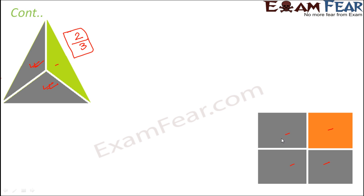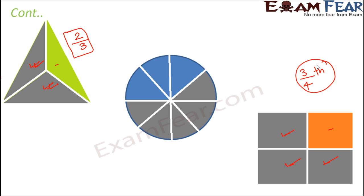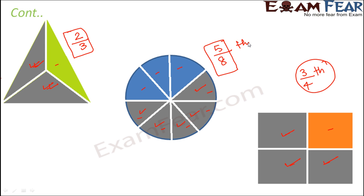Looking at this rectangle with eight equal parts, three out of four parts are shaded, so three fourths of the rectangle is shaded. Now this circle has eight parts and five of them are shaded, so five eighths of the circle is shaded. These examples help us understand how to determine what part of a figure is shaded.